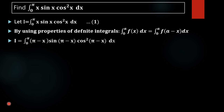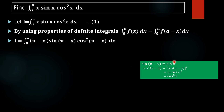On applying this property, we get I = ∫₀^π (π−x)·sin(π−x)·cos²(π−x) dx. Now we evaluate sin(π−x) and cos²(π−x) using trigonometric properties in the different quadrants. Since π−x is in the second quadrant, where sine is positive, we get sin(π−x) = sin(x).